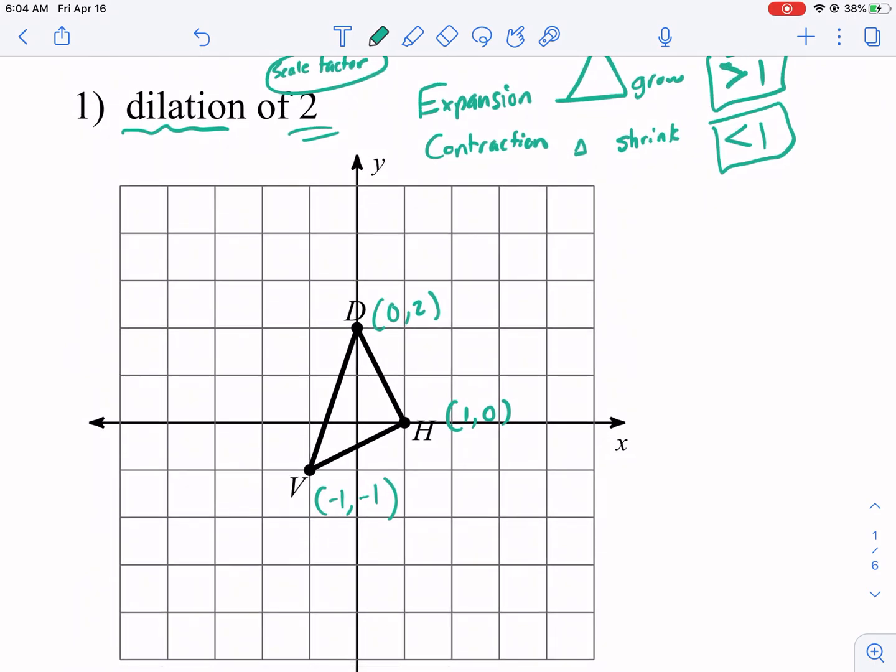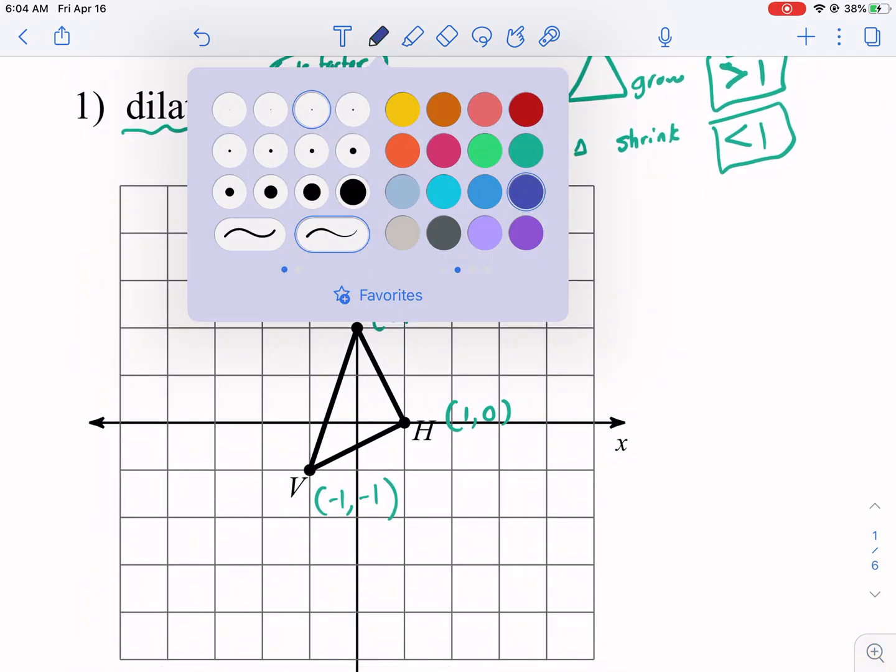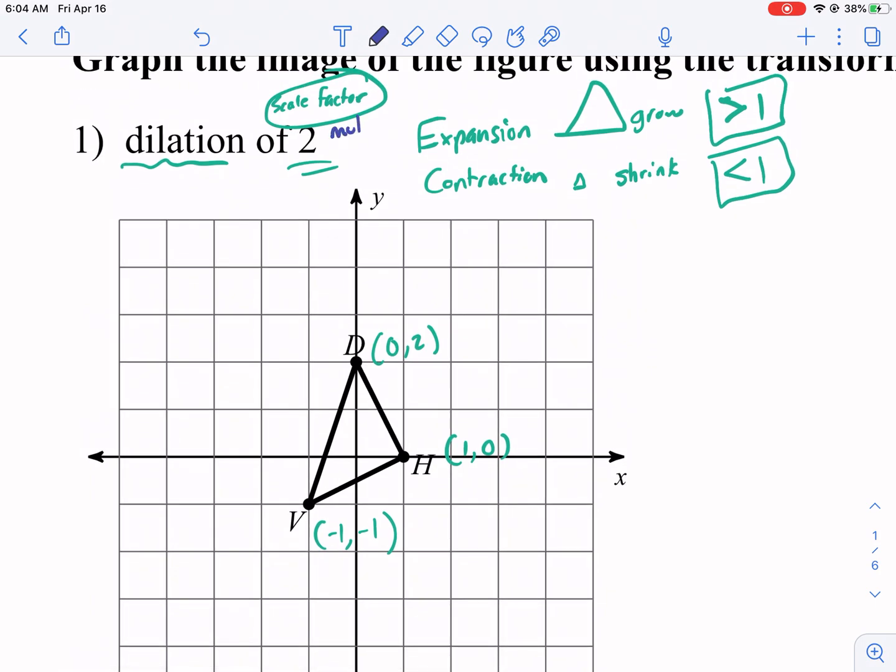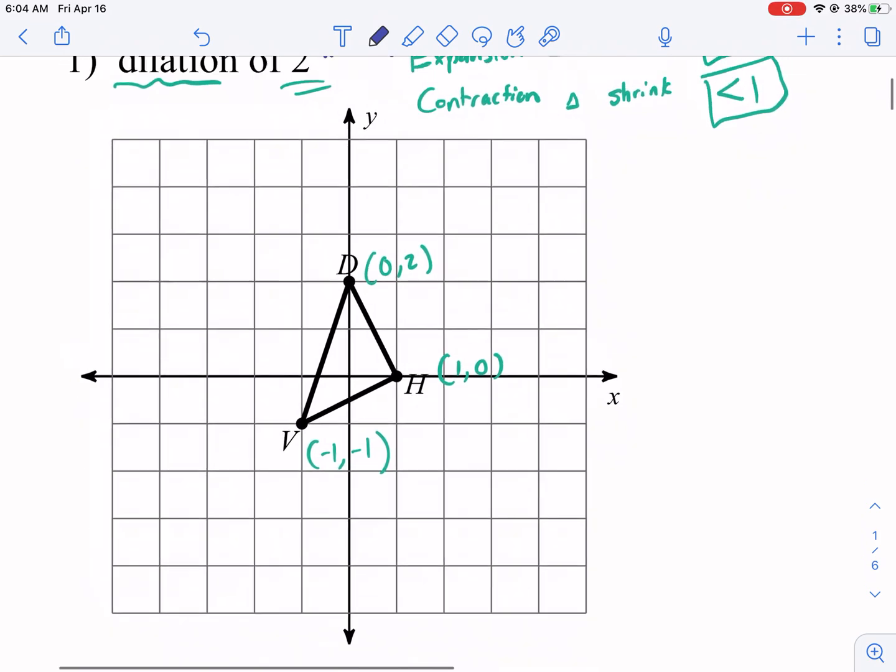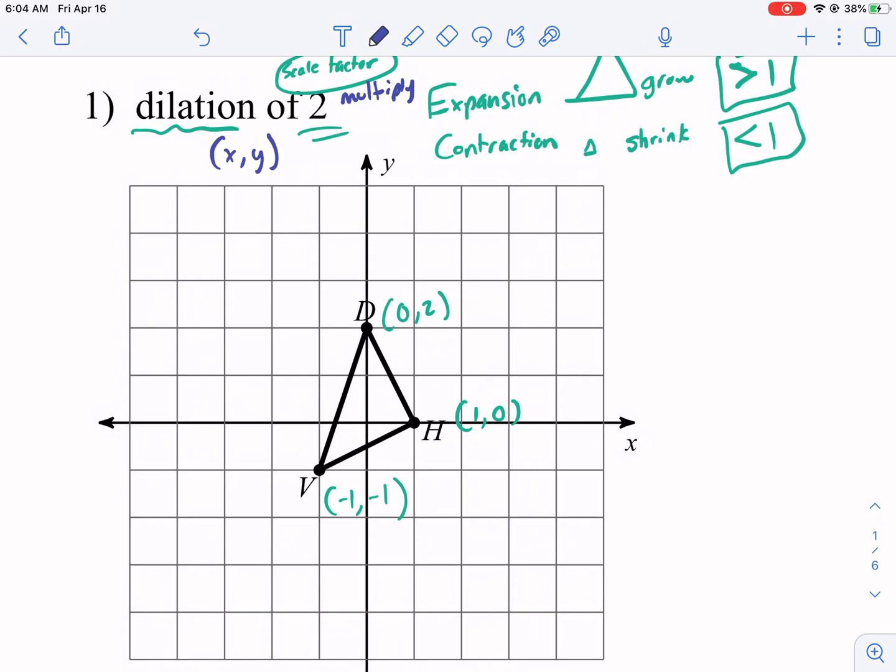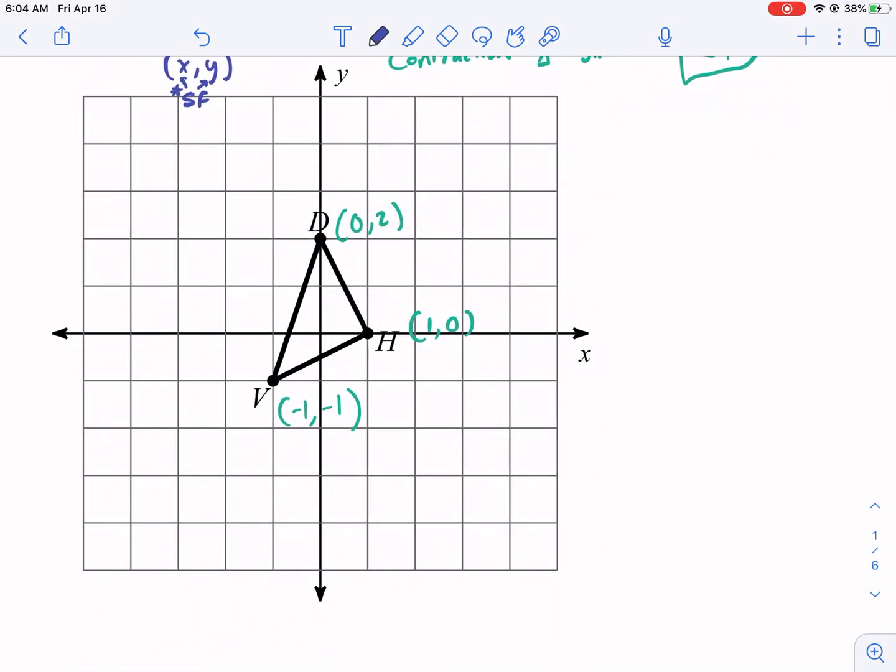If we're dilating it by 2, that means we are multiplying. So scale factor, we always multiply by the scale factor. Okay, so what does that mean? We're going to take all our x and y's, and we multiply by our scale factor to the x and to the y. And that's what we're doing. So if we're looking at d, we're going to multiply both the 0 times 2, 0 times 2. And the 2 times, I'm going to change it to a dot. I like the dot better. 0 times 2. And then we're going to do 2 times 2 to get our d prime.